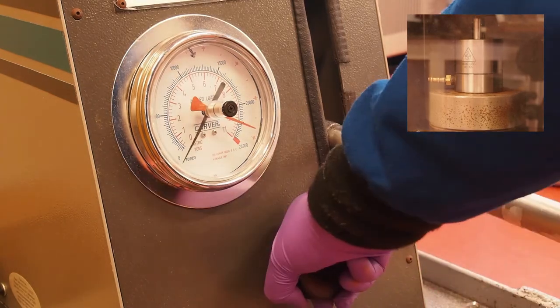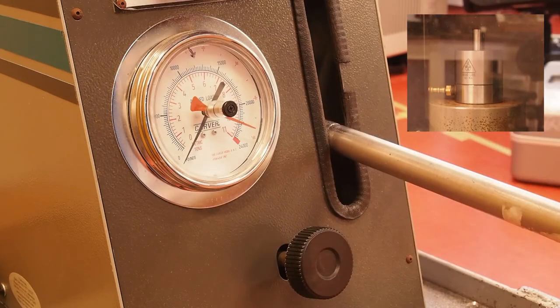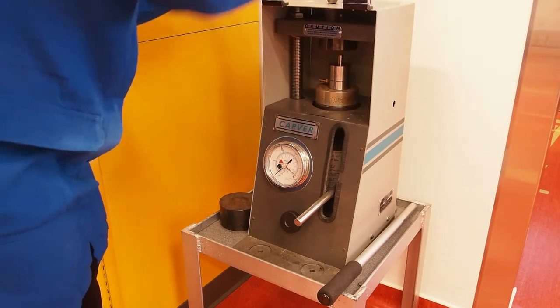Turn the pressure building knob counter clockwise to release the pressure. You can now unlock the safety shield and remove the pellet assembly.